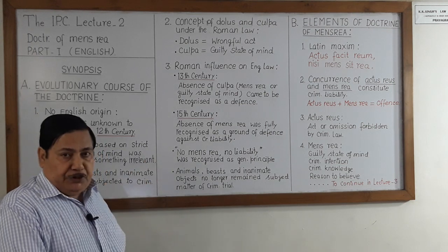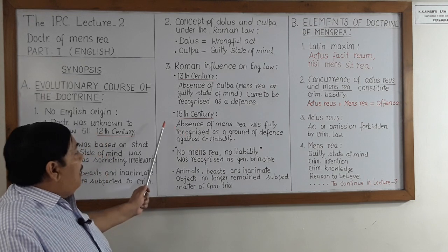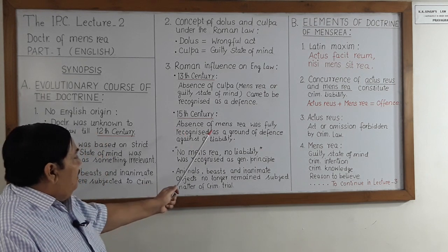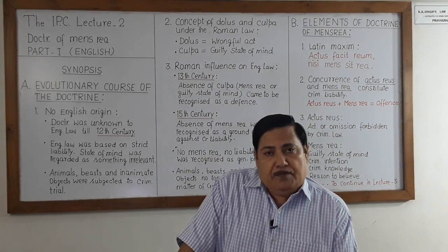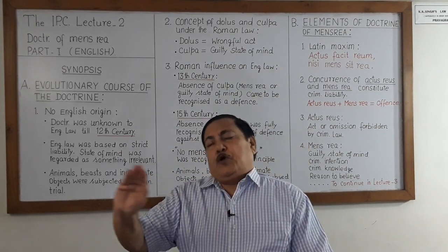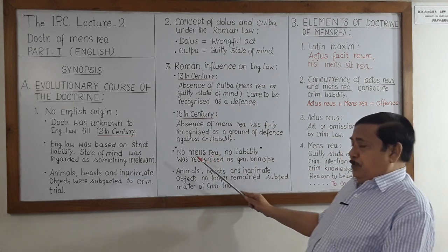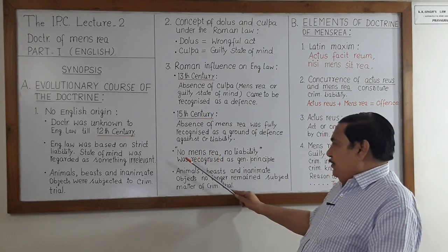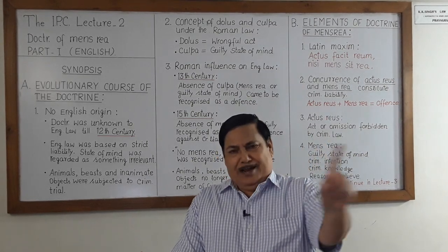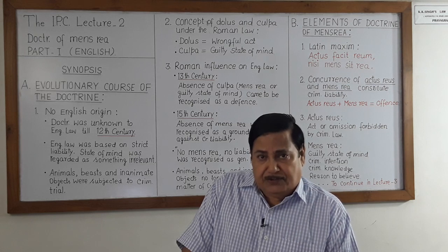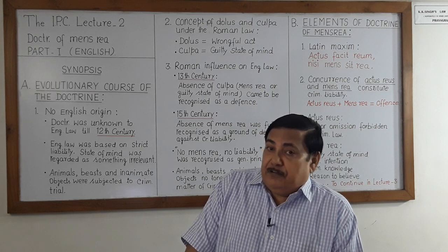The 13th century English law accepted and recognized mensrea as a defense. By the 15th century under English law, mensrea was fully recognized as a defense to criminal liability. It was accepted and recognized that no mensrea means no liability. 'No mensrea, no liability' was finally recognized under English law, but it was only in the 15th century — quite late.